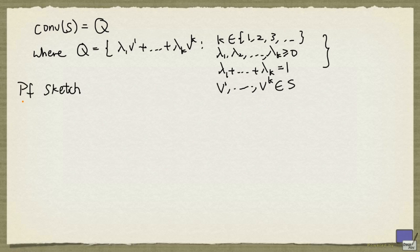We're now going to look at a sketch of the proof. It's clear that the convex hull of S contains Q, because the convex hull of S is a convex set, and if you take V1 up to Vk from S, then any convex set containing S must also contain all possible convex combinations of V1 up to Vk.